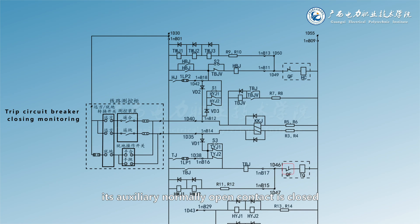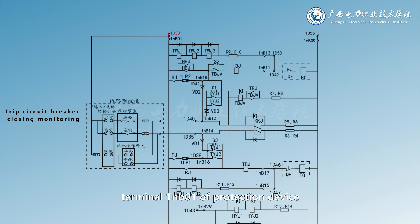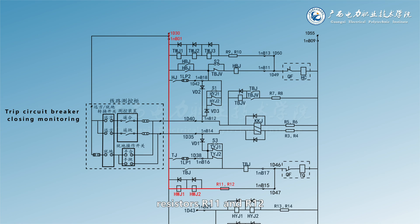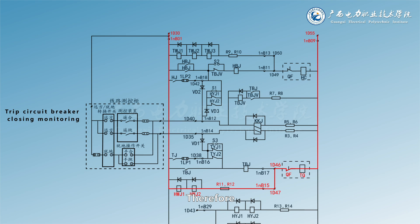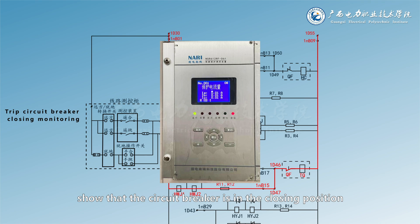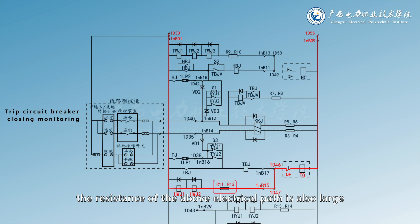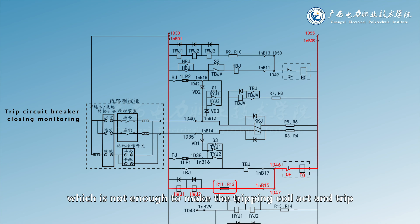When the circuit breaker is in the closing state, its auxiliary normally open contact is closed, resulting in the formation of the following electrical paths: 1D30, 1NB01, HWJ1 and HWJ2, R11 and R12, 1NB15, 1D47 and 1D46, QF, Tf. Therefore, the coil of closing position relays HWJ1 and HWJ2 is excited, and the contact is connected to the closing indicator of the protection device to show that the circuit breaker is in the closing position. Like the trip position monitoring circuit, the resistance of this electrical path is also large, so the current flowing through the tripping coil is very small and not enough to make the tripping coil act and trip.